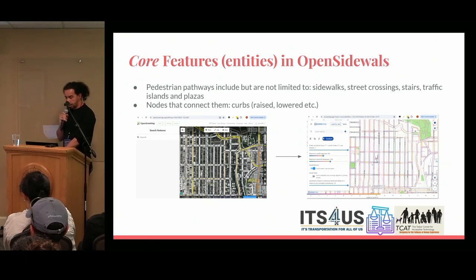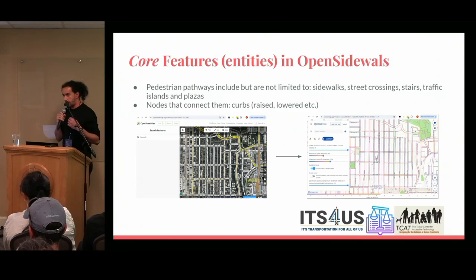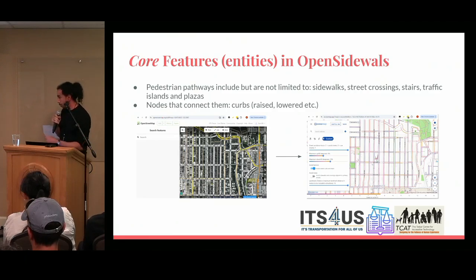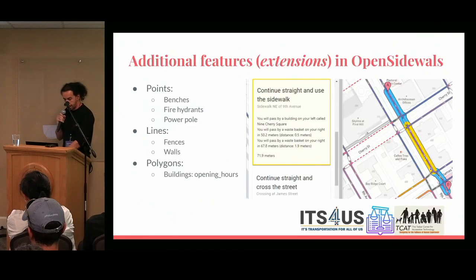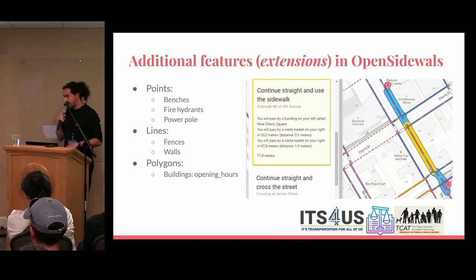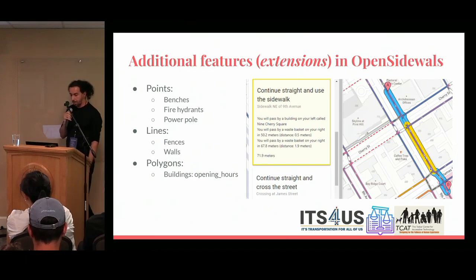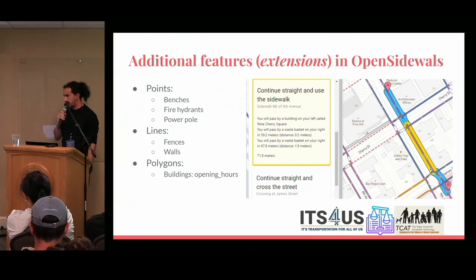Open Sidewalks has two types of entities. Core entities are traversable: sidewalks, crossings, and plazas. The ID editor shows how it looks once rendered in AccessMap. Other entities are extensions — things outside the graph but important to map, like benches, fire hydrants, power poles, fences, walls, and buildings. We'll be adding more extensions helpful for pedestrian navigation.